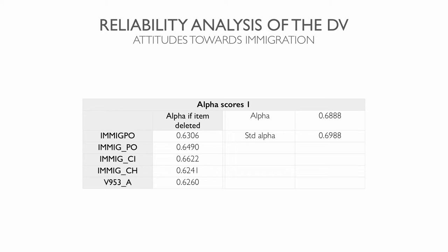Based on the recoding mentioned previously, the score of this new measure ranged from minus 5, when the respondent answered negatively to all 5 questions, to plus 5, where the respondent answered positively to all 5 questions. With an alpha of 0.6888, a standardized alpha of 0.6988, and alpha-if-deleted scores between 0.60 and 0.6622, the questions are sufficiently related to be combined into an index.